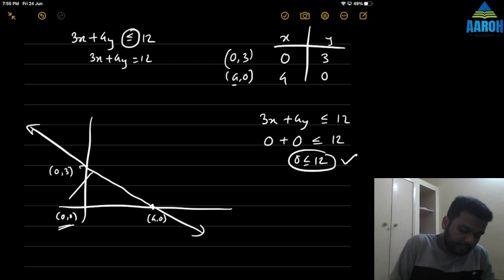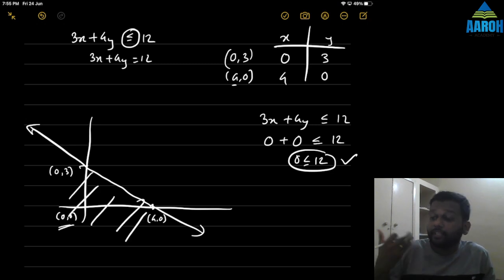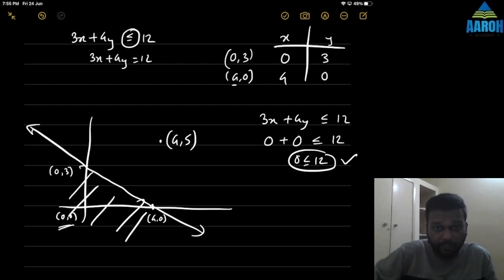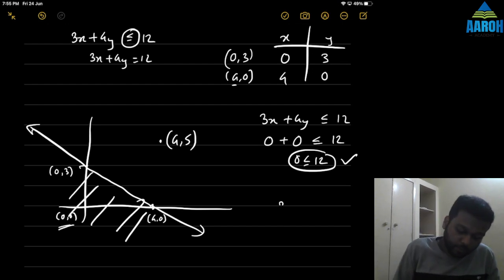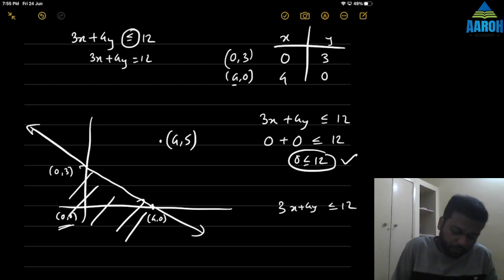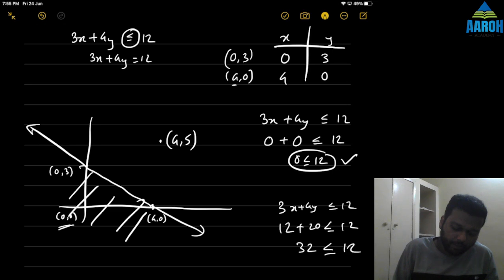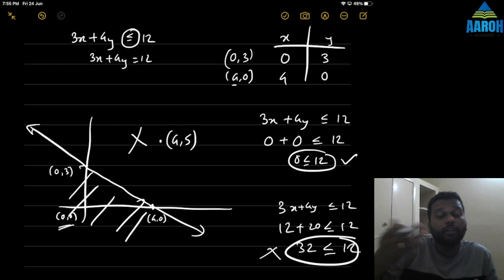We can check in the opposite way as well. Let's take a point above the line, like 4 comma 5. Substituting into 3x plus 4y less than or equal to 12: 3 times 4 is 12, plus 4 times 5 is 20, giving 32 less than or equal to 12, which is obviously wrong. That means the area is not on the upper side; the area is on the side towards the origin.